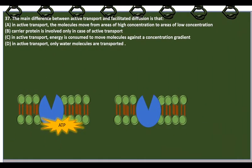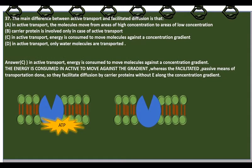The main difference between active transport and facilitated diffusion is that active transport utilizes ATP and needs energy to move molecules against the concentration gradient — from lower to higher concentration. Facilitated diffusion, meaning transport with the help of carrier proteins, is a passive means of transportation along the concentration gradient, moving molecules from higher to lower concentration. There is no need for energy in facilitated diffusion.